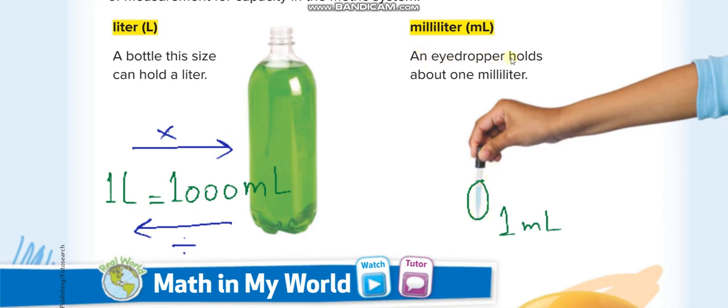It's like an eyedropper holds about one milliliter, like this eyedropper. This much amount of liquid, you can see - very few drops only - that is just one milliliter.